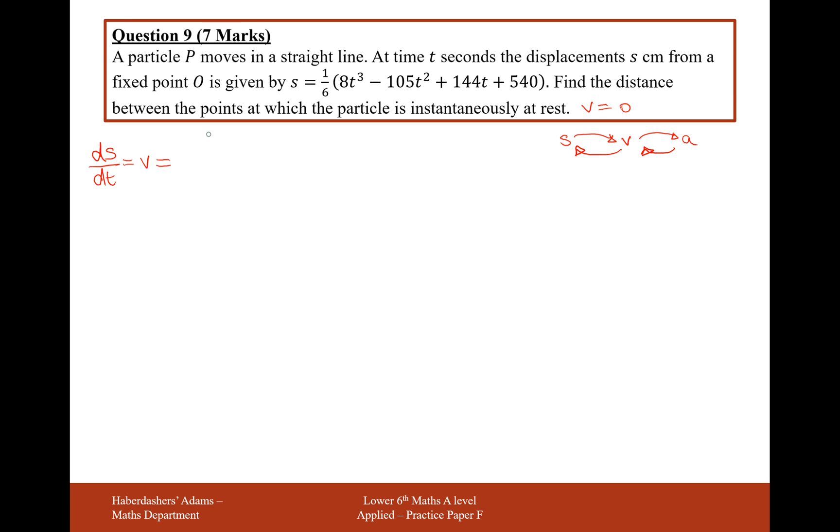In this question here, differentiating this, remember we reduce the power by 1. It's going to be 24t² over 6, take away 210 over 6t, plus 144. Remember that t to the power of 1, reduce that power by 1 and you get 0. t to the power of 0 is just 1, so we can effectively just write this as 144.